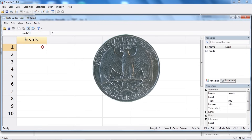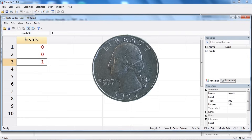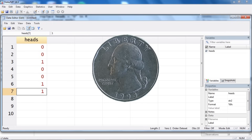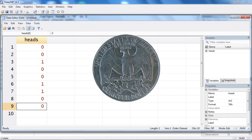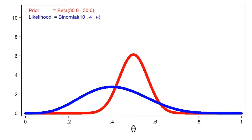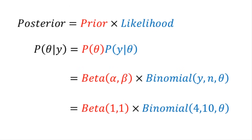We can also investigate the value of theta by conducting an experiment. We could flip the coin ten times and calculate the proportion of times that the coin lands with the head side up. Here we observe four heads out of ten tosses of the coin. We can quantify the results of our experiment using a likelihood function — in this case, the blue line displays a binomial likelihood function for theta given four heads out of ten coin tosses.